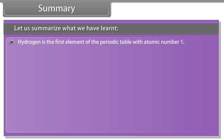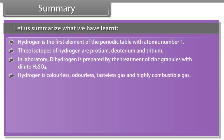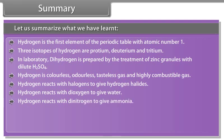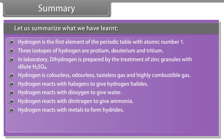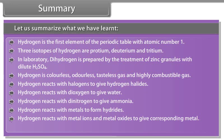Summary. Let us summarize what we have learned. Hydrogen is the first element of the periodic table with atomic number 1. Three isotopes of hydrogen are Protium, Deuterium and Tritium. In laboratory, dihydrogen is prepared by the treatment of zinc granules with dilute sulfuric acid. Hydrogen is colorless, odorless, tasteless gas and highly combustible gas. Hydrogen reacts with halogens to give hydrogen halides. Hydrogen reacts with dioxygen to give water. Hydrogen reacts with dinitrogen to give ammonia. Hydrogen reacts with metals to form hydrides. Hydrogen reacts with metal ions and metal oxides to give corresponding metal. Hydrides can be categorized as ionic, covalent and metallic hydrides.